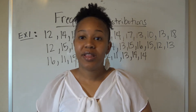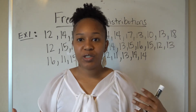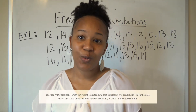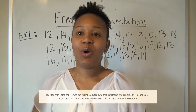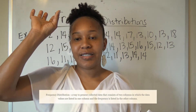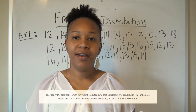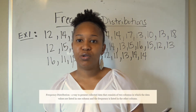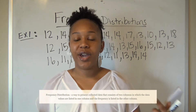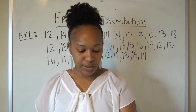Welcome back. In this video we are going to be talking about frequency distributions. A frequency distribution is a statistical way to present data. It contains two columns: one column has the data, and the second column has the frequency of that data. Frequency distributions are usually used when you have a lot of repeating data — it's a way to simplify and show how many times each data value is present.